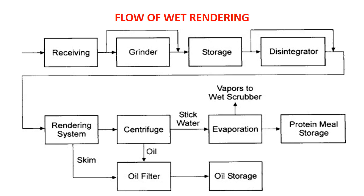Here we can see the detailed flow of operation in wet rendering. First, the skin is removed from the dead animal, which is then cut into pieces, ground, and stored if not processed immediately. The material is disintegrated using a crusher or pre-breaker, then goes to the rendering system. After processing and centrifugation, the water and oil are separated. The oil goes to a fat settling tank, the water is evaporated from the solid material after cooking, and finally we get meal — either meat meal, carcass meal, meat-cum-bone meal, or bone meal.